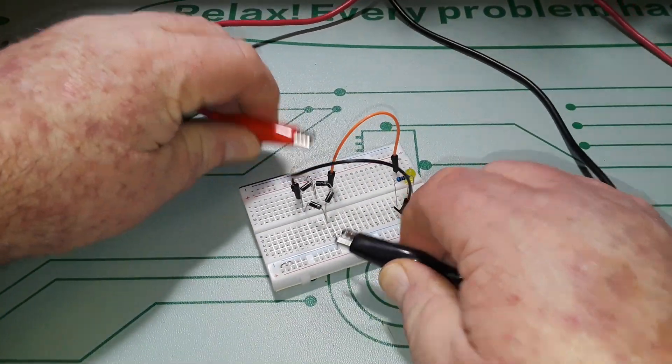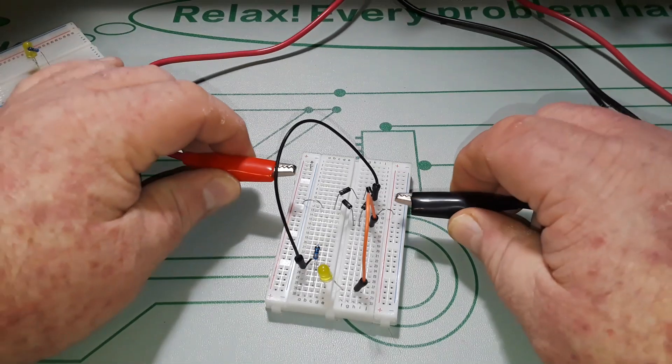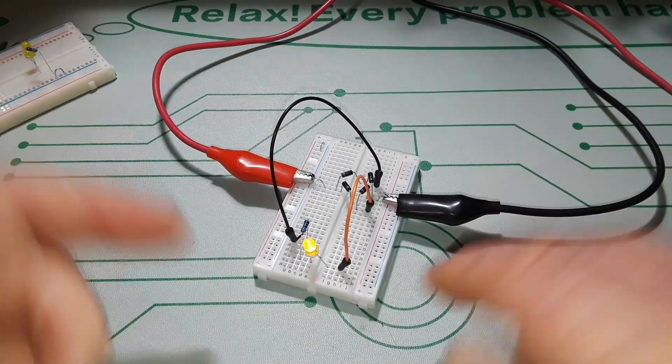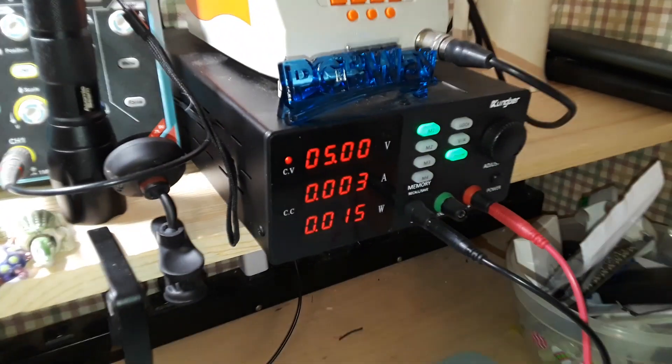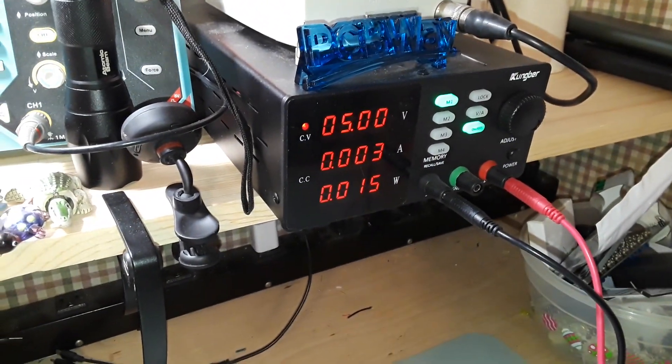Because we're going through the diodes and there's a little loss, we're only at 3mA and 0.15W. But here's the magic. We swap them around. It still lights.